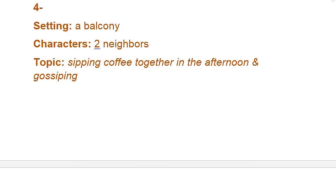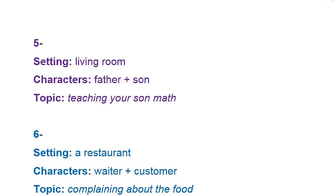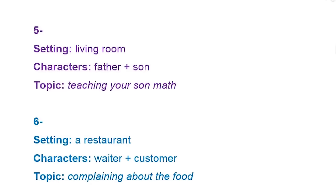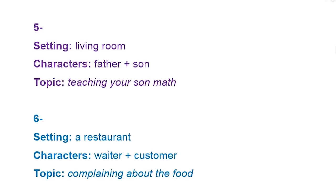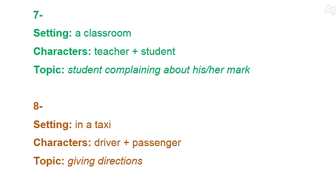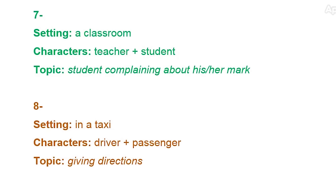The fourth one is my favorite — it's like two neighbors sipping coffee together in the morning and gossiping. The fifth one is so funny: a father and a son, or a mother and a daughter, and one of the parents teaching math to their child. The sixth one is cheesy: a waiter and a customer and the customer complaining about the food. The seventh one is also a favorite because you get the students to be in your shoes — basically a teacher and a student and the student complaining about their mark. The last one is in a taxi between a driver and a passenger on the topic of giving directions.